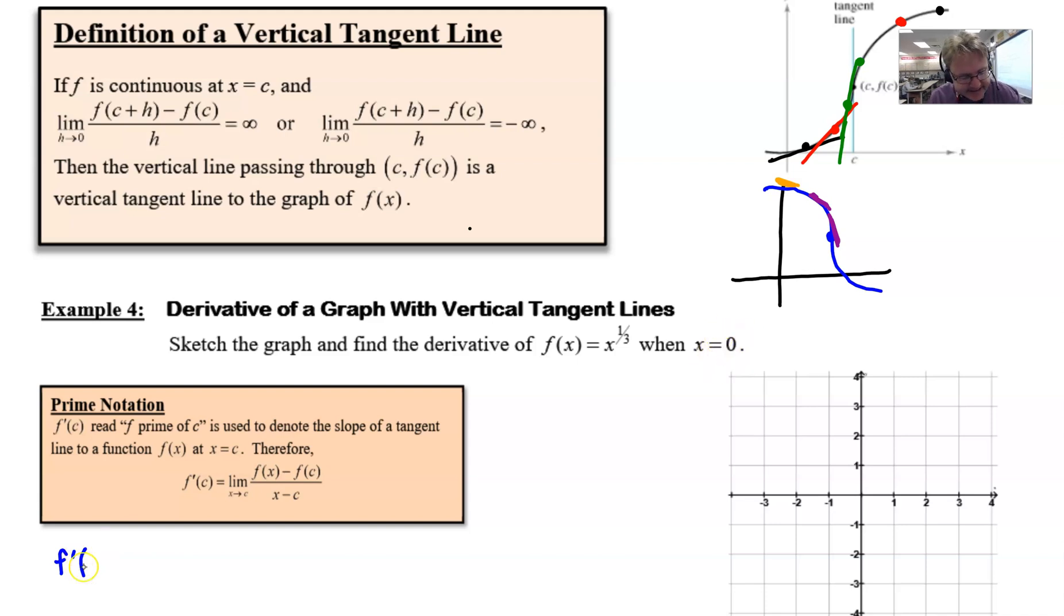We see that f'(c), and our c in this case is going to be zero, is going to be equal to the limit as x approaches that c, which is zero, of the function f(x) on top. Our function f(x) is simply x to the one-third minus f(c). Off to the side we might think about what is f(0)? Well, our c is zero—that would be zero to the one-third power, which of course is going to be zero.